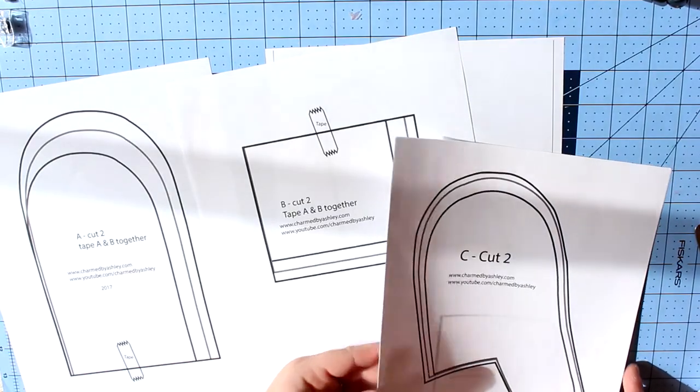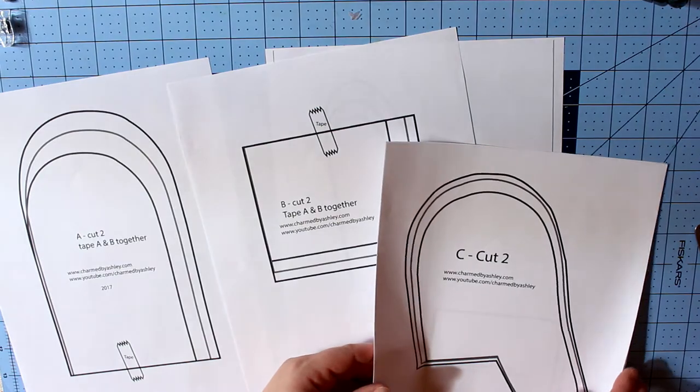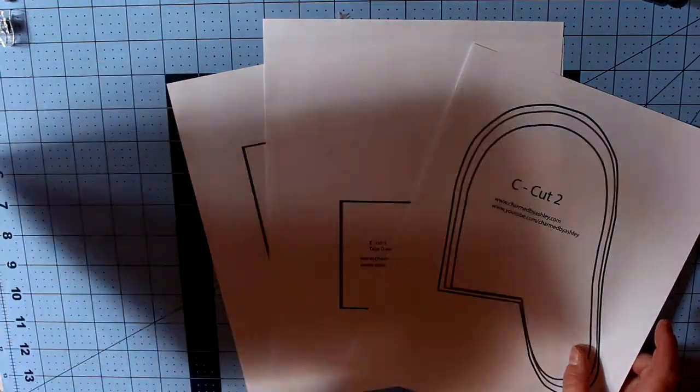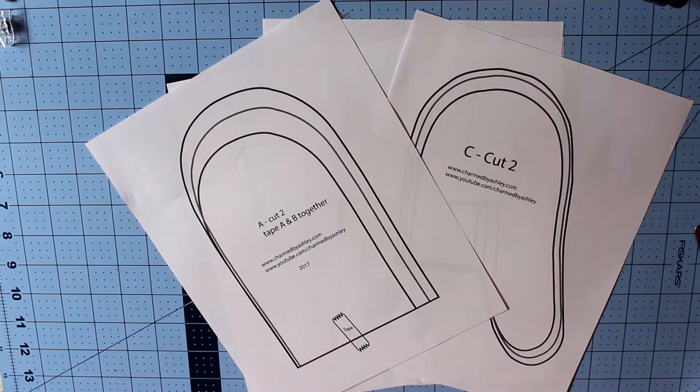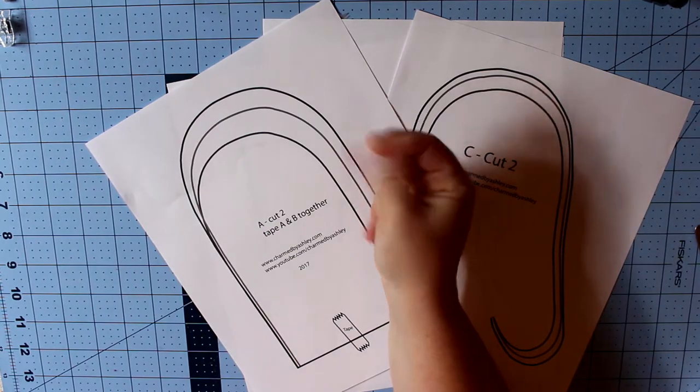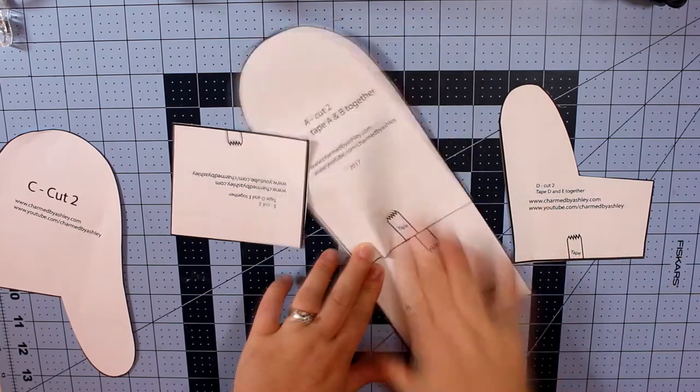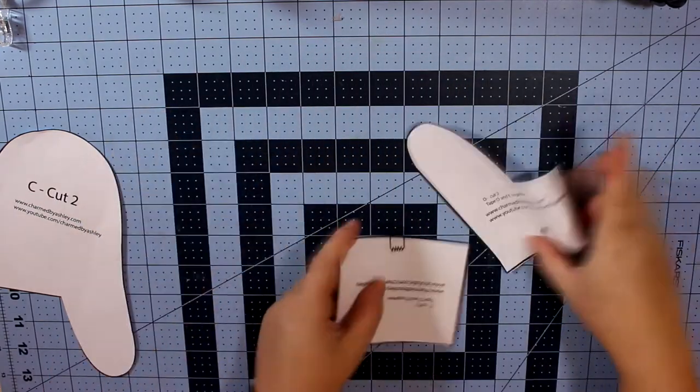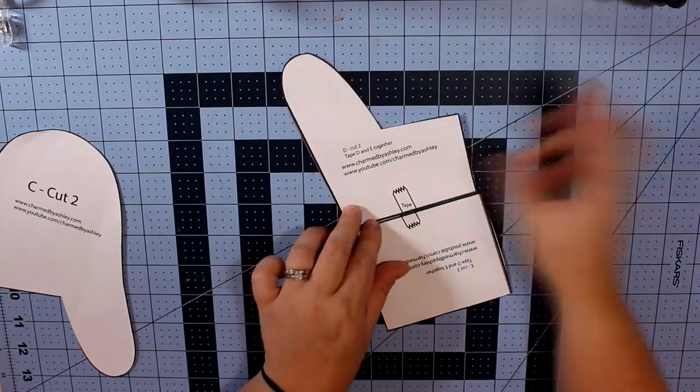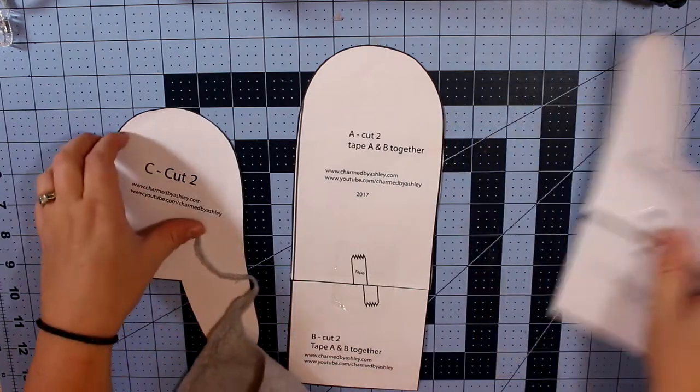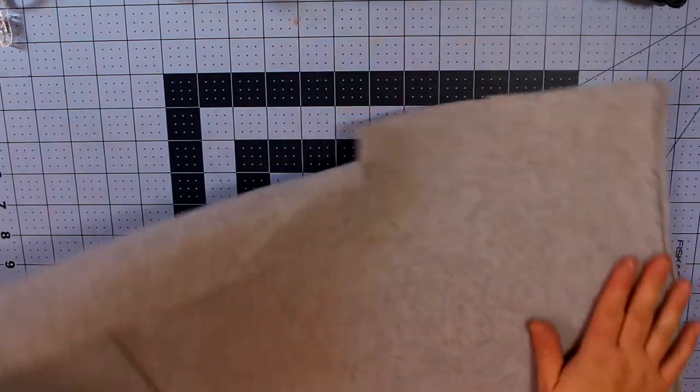Once you have your pattern printed out, you're going to cut out the pieces. You will have to tape a few of them together just because they couldn't fit all on one piece of paper. And then you're going to choose your fleece. They have so many different prints these days. I am just going to use gray in this tutorial and now I'm going to start cutting out my pieces.